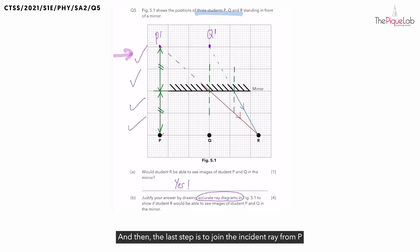Finally the last step is to join the incident ray from P to the mirror where the normal is. If you want to pause the video and do the same for Q, you can do that now.